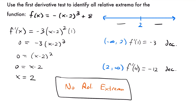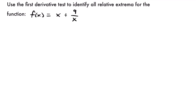Let's look at one final example. We have the function f of x equals x plus 9 over x. To use the first derivative test here, the first thing we want to do is take the derivative of our function. I see that we have an x in the denominator, so I'm going to rewrite this function first.